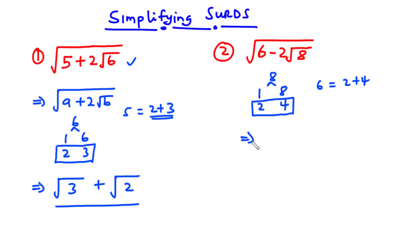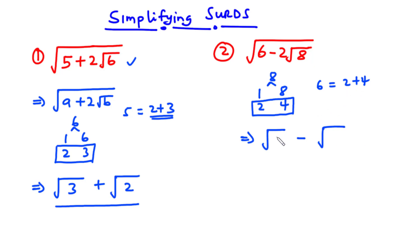Here we write the square root of a number minus the square root of another number — minus because the operation sign in 6 minus 2 root 8 is subtraction. Since 2 is part of the pair, we put 2 on the right-hand side. So we have root 4 minus root 2. The square root of 4 is 2, so the answer is 2 minus root 2.